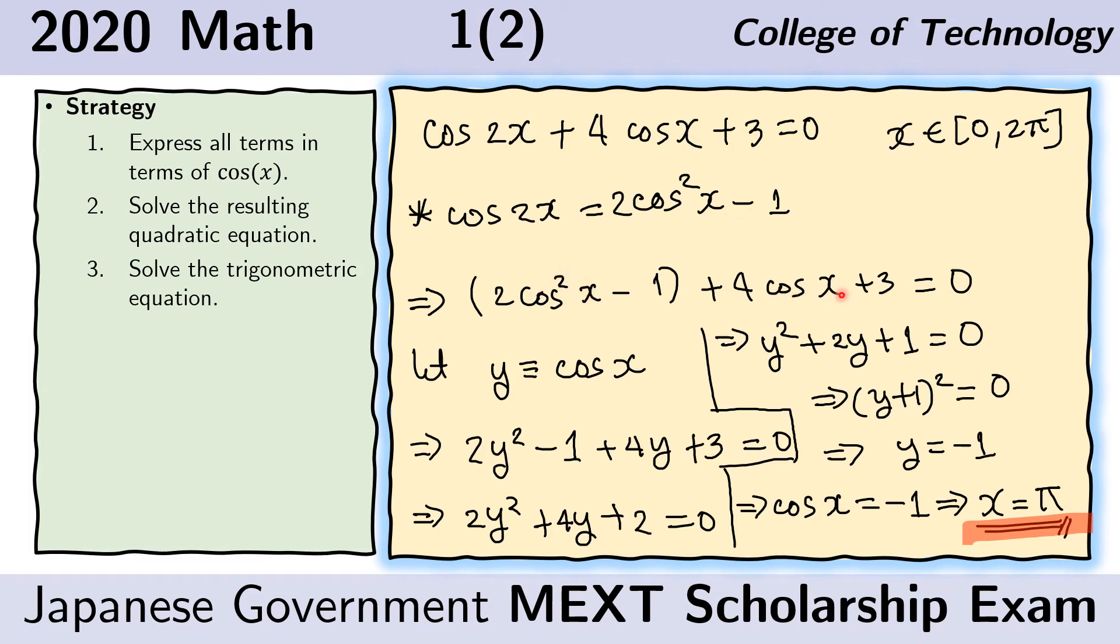And now we can make the substitution y equals cosine x. So this is just for convenience so that it is easier for us to write everything. Instead of writing cosine x every time, we just write y. So let's replace this with y squared and this with y. And so we have this. Now we just group like terms.